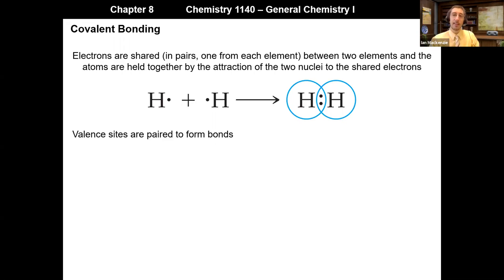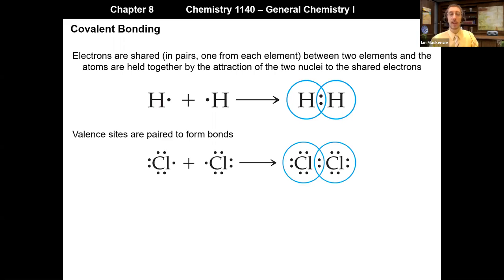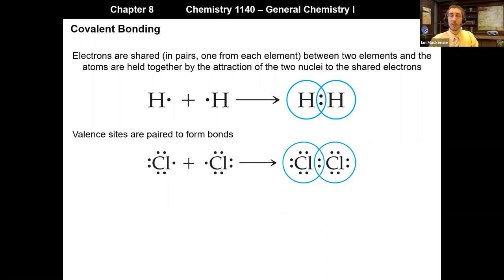It's the valence sites — those unpaired electrons — that are used to form bonds. Looking at two chlorine atoms forming Cl2: each has only one valence site, meaning one unpaired electron. The faces of the Lewis symbol with paired electrons are not shared. Instead, we share at the valence sites. Each chlorine starts with seven valence electrons, but after sharing, each acts as though it has eight and both are satisfied.